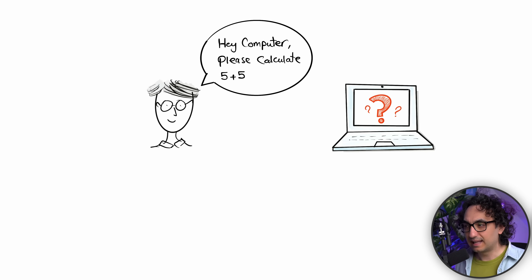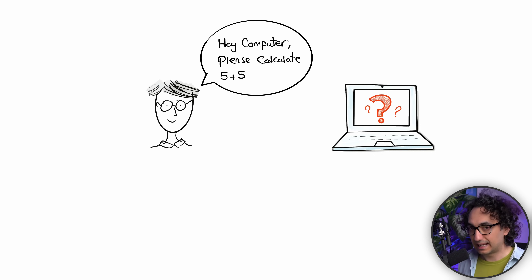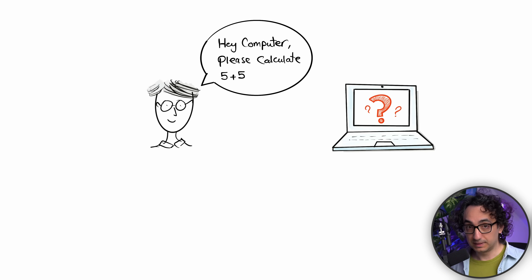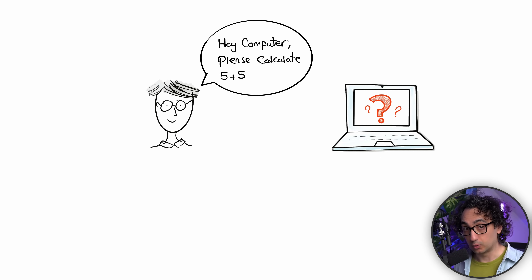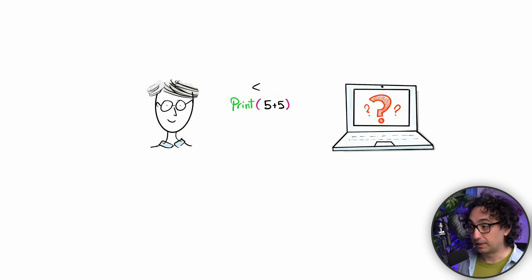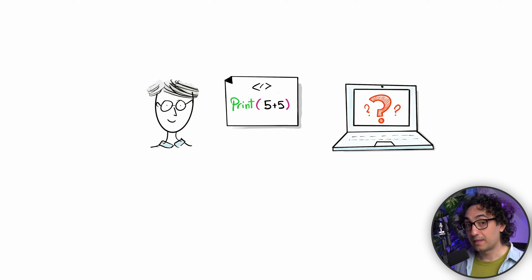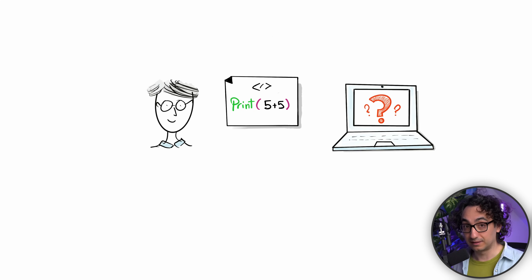We cannot use natural human language to give tasks to your PC. Instead, we have to give instructions in a language the computer understands. We write a short piece of code — for example, in Python: print(5 + 5). Now the computer will understand the instruction and give us the result: 10.